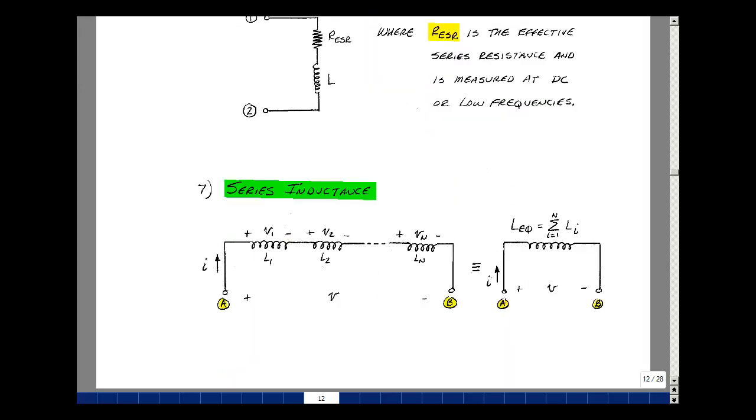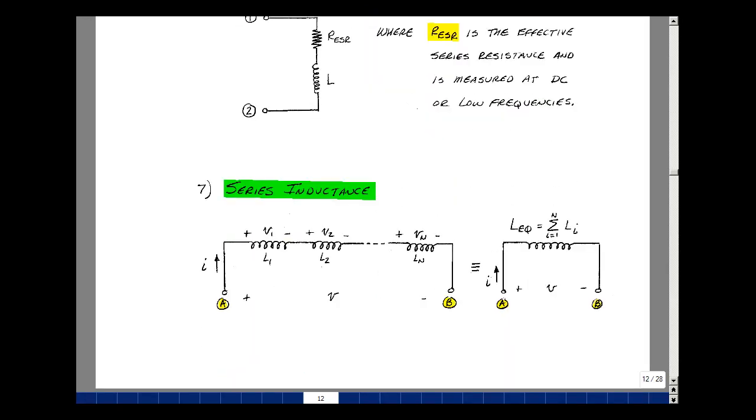Suppose we have N inductors in series. I'm going to refer to idealized inductance incorrectly as an inductor, but that's what most engineers do. But keep in the back of your mind that ideal inductance has a definition, and an inductor has an equivalent circuit.